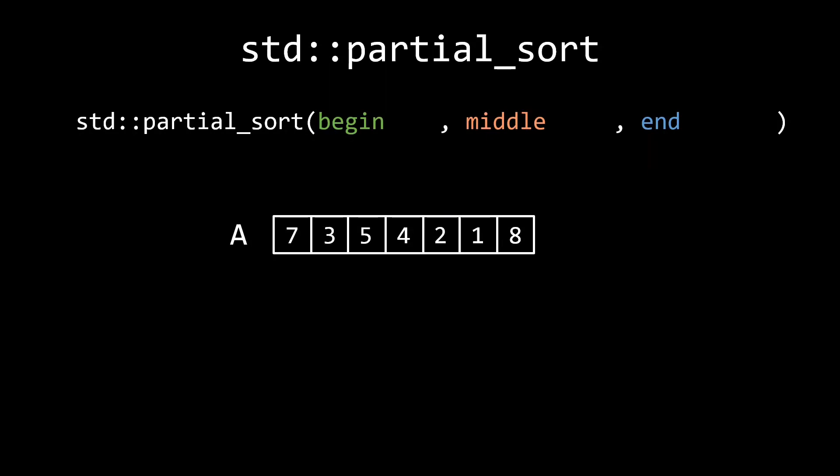It then swaps elements around, such that the elements indicated by the range begin to middle are those that will end up there if the whole range begin to end would have been sorted. In this case, where we don't supply a custom comparator and hence sort from low to high, we end up with the 3 lowest numbers from the begin to end range. The order of the numbers in the middle to end range is undetermined.